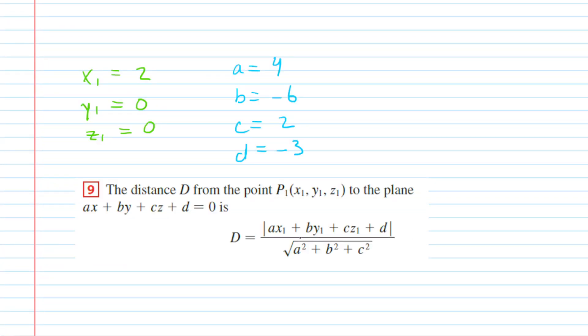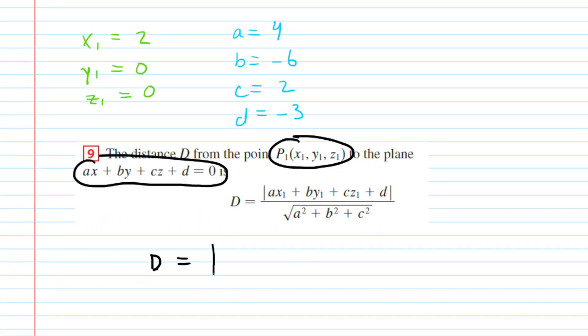The distance from a point to a plane. We already have the values for our point. And we have the values for a, b, c, and d from that other plane equation. So, let's just go ahead and plug everything in here. We're going to have the distance D is equal to an absolute value of our a, which was 4, times our x1, 2,